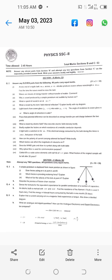Part number three: Why is sound produced by a simple pendulum not audible by human ear? Number four: What is speed of sound in air at 20 degrees centigrade? Number five: What is meant by the term total internal reflection? Explain briefly with ray diagram. And number six.